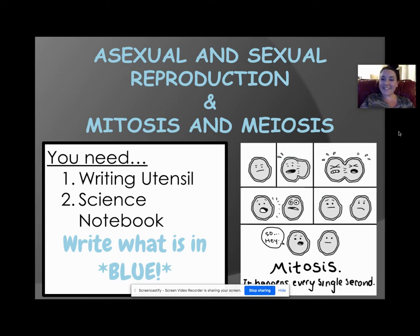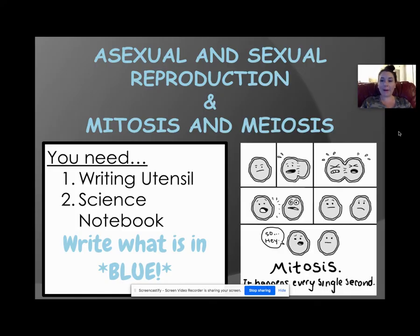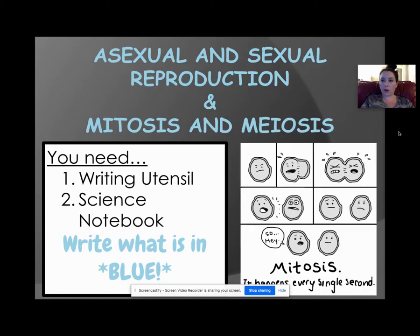Hi ladies and gentlemen, we are on the last lesson of unit 4 of genetics. I combine two things together: sexual and asexual reproduction, and mitosis and meiosis, because they go hand in hand.